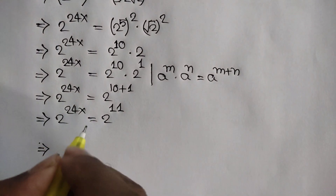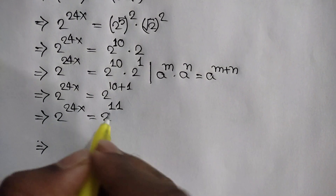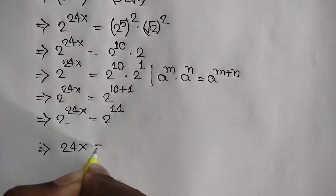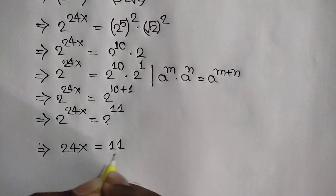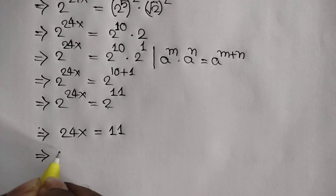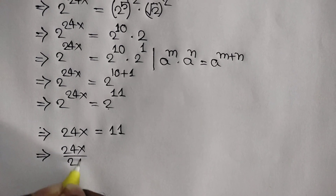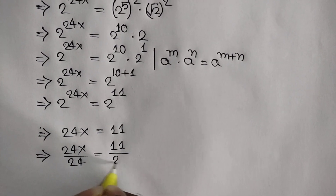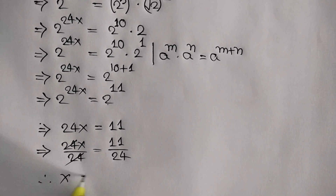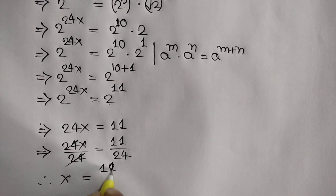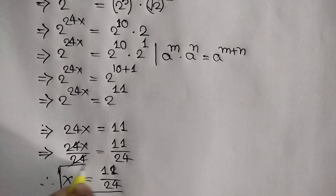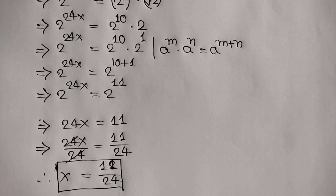Here we can see there are the same base and different powers, so we can write 24x is equal to 11. Now dividing both sides by 24, we get 24x over 24 is equal to 11 over 24. The 24 cancels, so the value of x is 11 over 24.